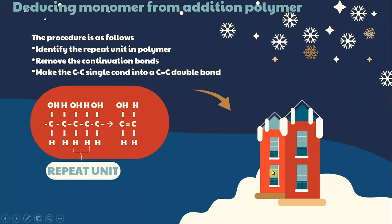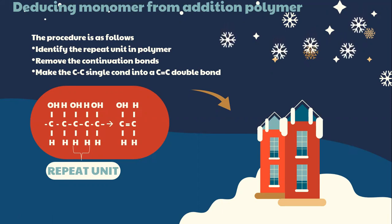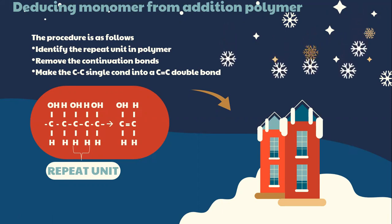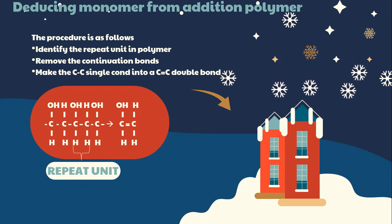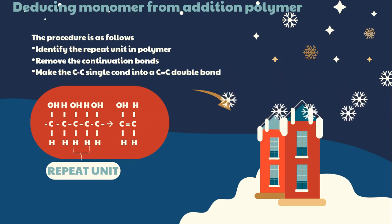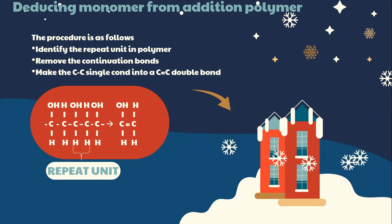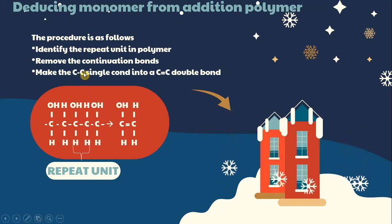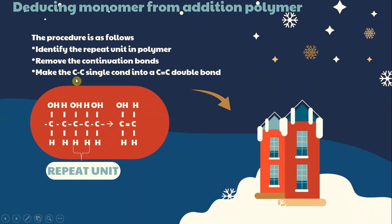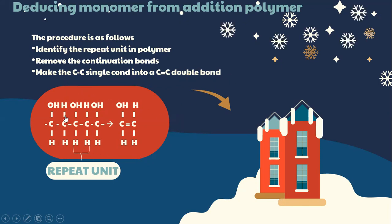Let's look into deducing the monomer from an addition polymer. The procedure is as follows: first, identify the repeat unit in the polymer. Second, remove the continuation bonds. Finally, change the single bond into a double bond, as shown in this chemical reaction.